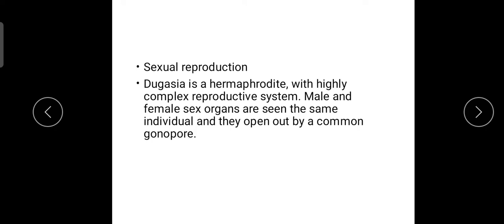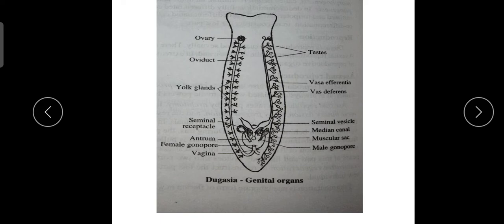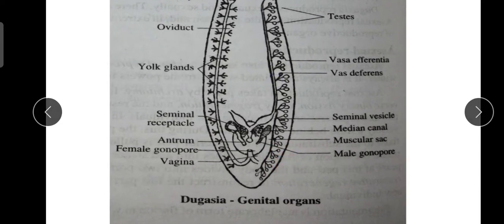Dugesia is a hermaphrodite — male and female sex organs are present in the same individual, and they open out by a common gonopore.